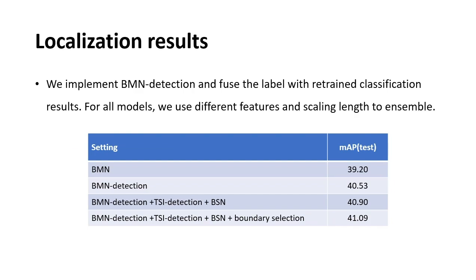In this year's localization challenge, we implement the detection module in the BMN framework and fuse the label with retrained classification results. For all models, we use different video features and different feature rescaling lengths to assemble results. Our scale invariant method combined with BMN and BSN achieved 41.09 MAP on the test server. In the future, we hope to dive deep into the aforementioned long-standing problems and propose a unified action detection framework.